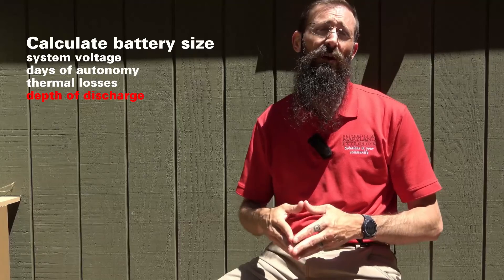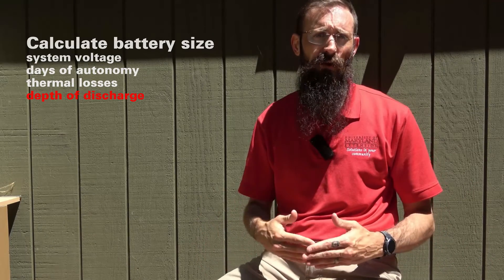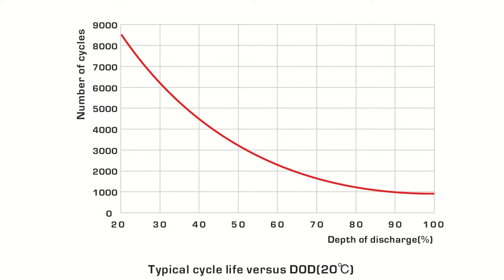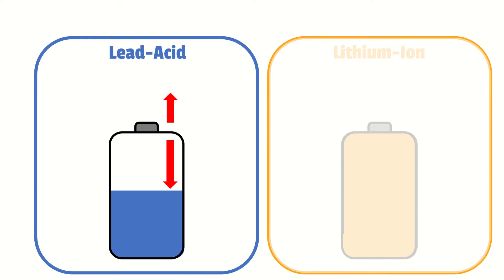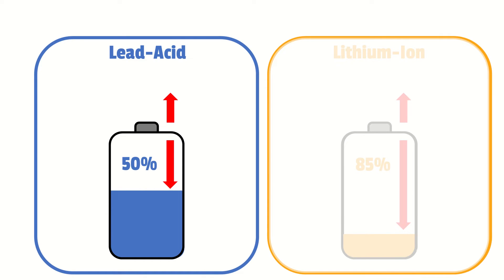Next, we consider the depth of discharge for our battery bank, which describes how far down the battery can be drained. Batteries are not designed to be discharged completely and will actually live longer the less they are drained. It's generally accepted that lead acid batteries have a 50% maximum depth of discharge, while lithium ion batteries can be discharged to about 85% of their rated capacity without significantly degrading lifespan. A 1,000-watt lead acid battery should deliver around 500 watt hours, while a lithium ion battery would deliver about 850 watt hours. For this video, we'll assume a maximum depth of discharge of 50%, or a factor of 0.5.